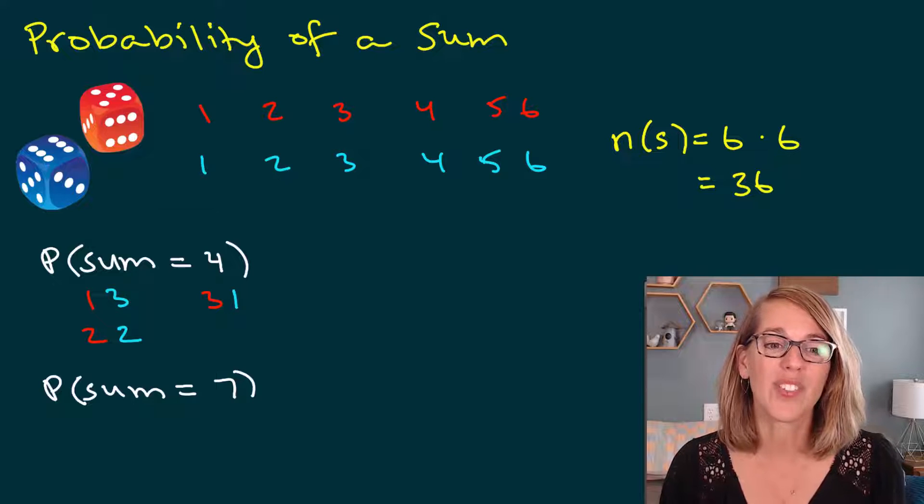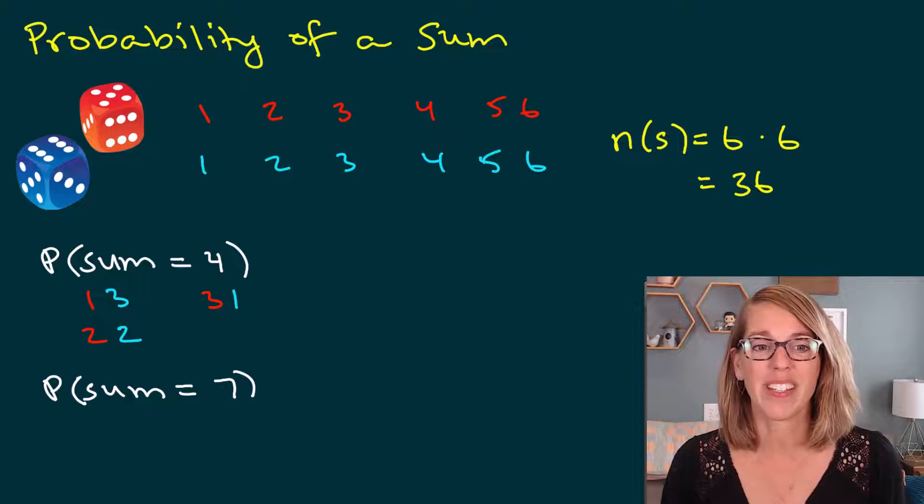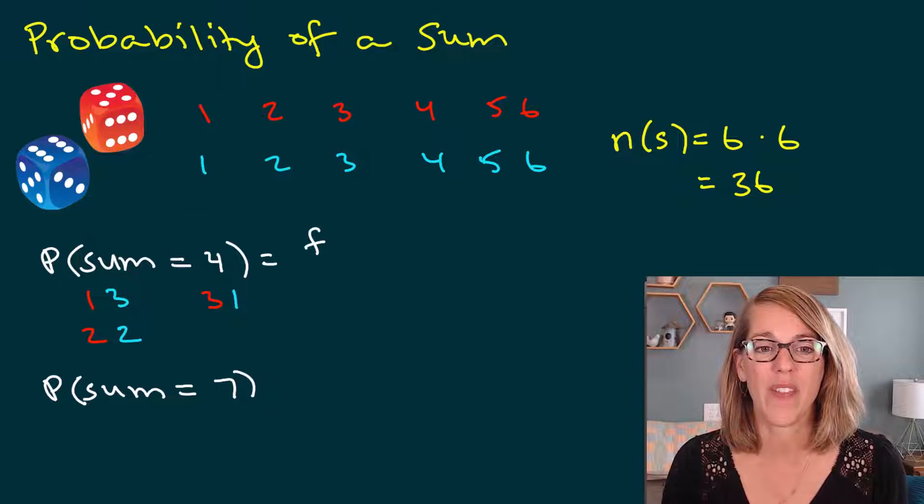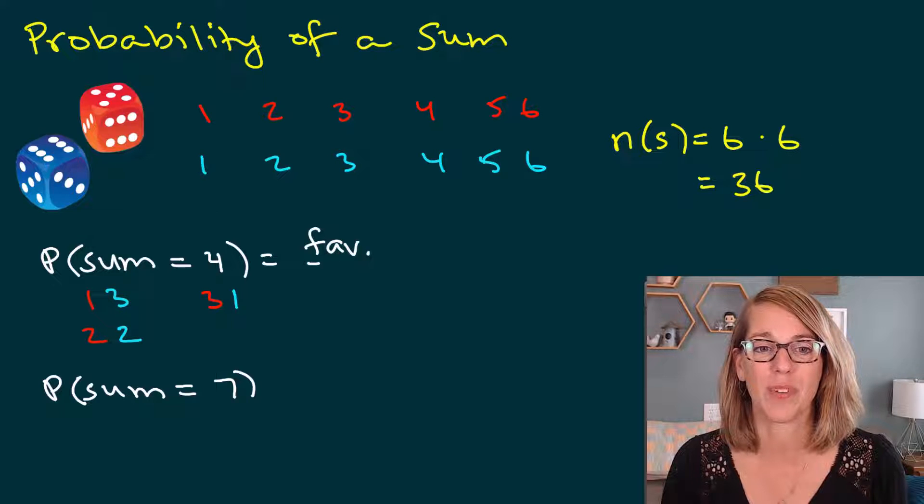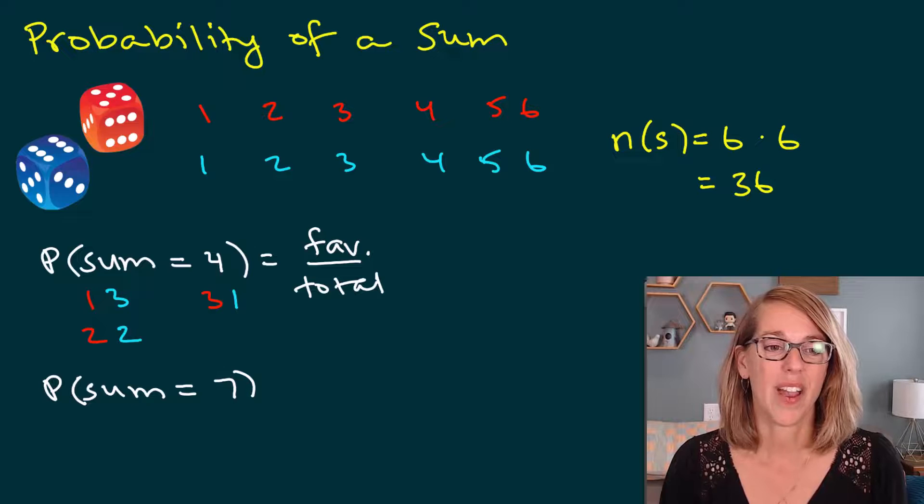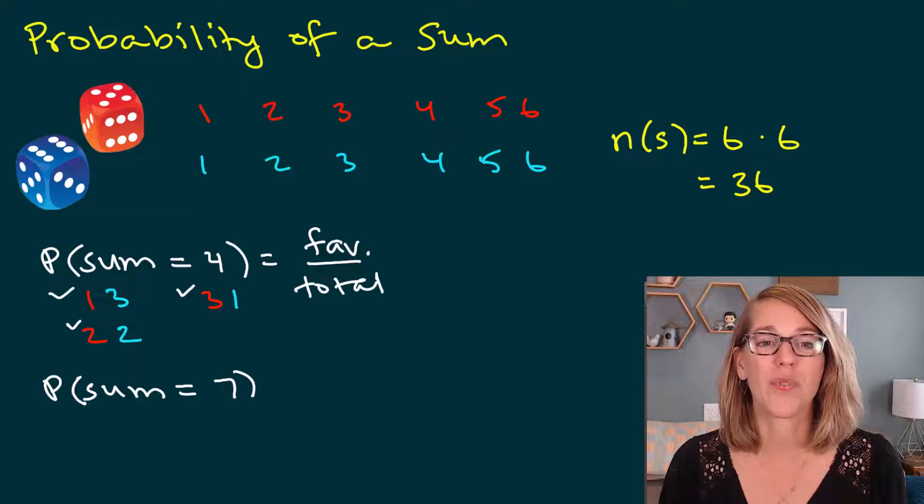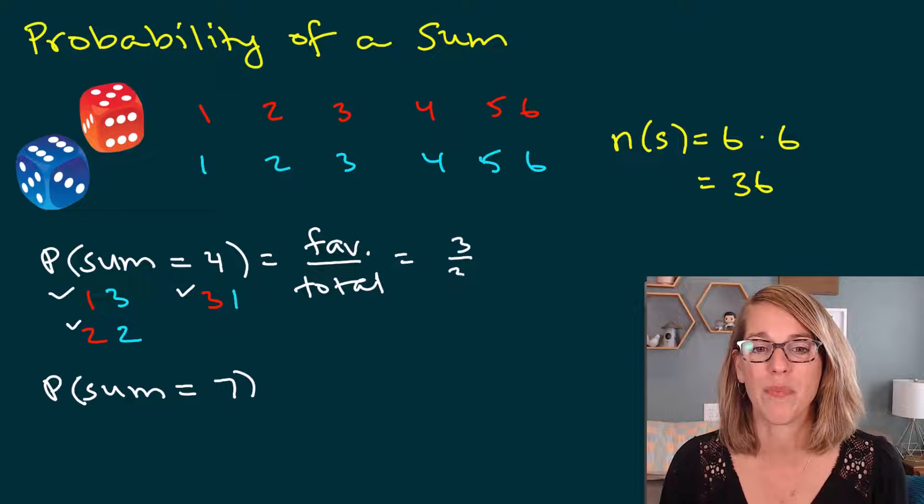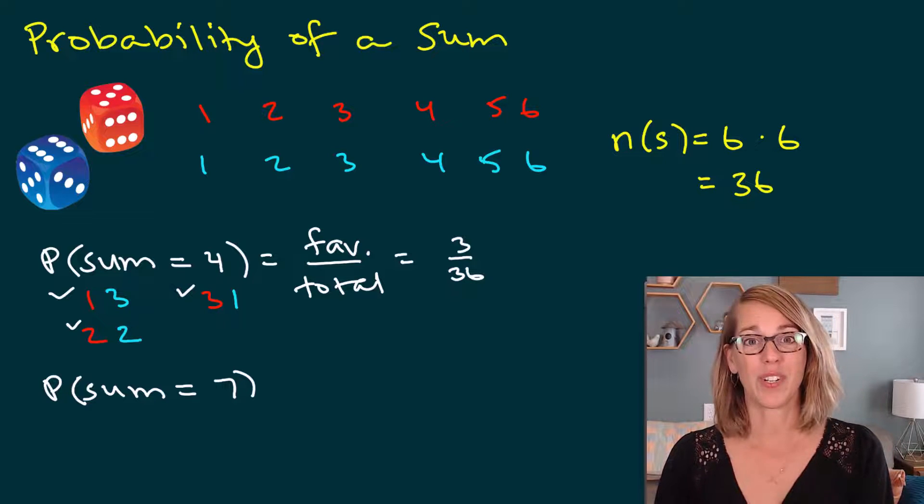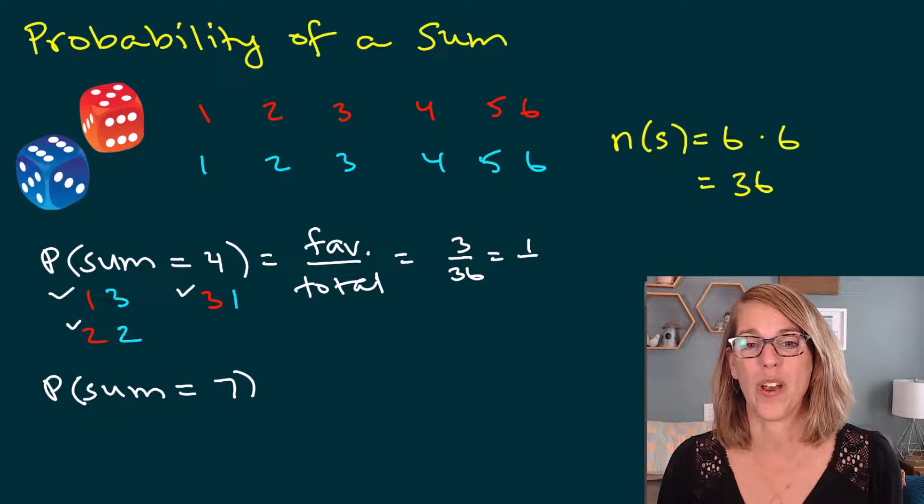So that leaves me with one, two, three different possibilities. I'm going to put this together with my favorable outcomes. I've got one, two, three favorable outcomes. So that's going to be three out of my 36, which I can reduce to one twelfth.